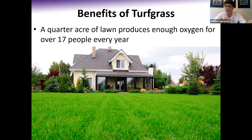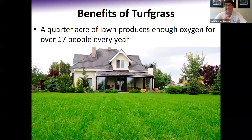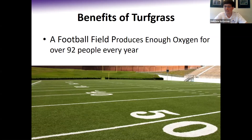Most homeowners have at least 2,500 square feet of lawn if not much more. A quarter acre lawn, which is a good average size, is going to produce enough oxygen every year for a family of 17 people to breathe from that lawn alone. That's a really cool fact and one of the great benefits of lawns we don't often think about. Scaled to a football field, an average football field produces enough oxygen for 92 people every single year. So there are so many great reasons to have a healthy lawn.